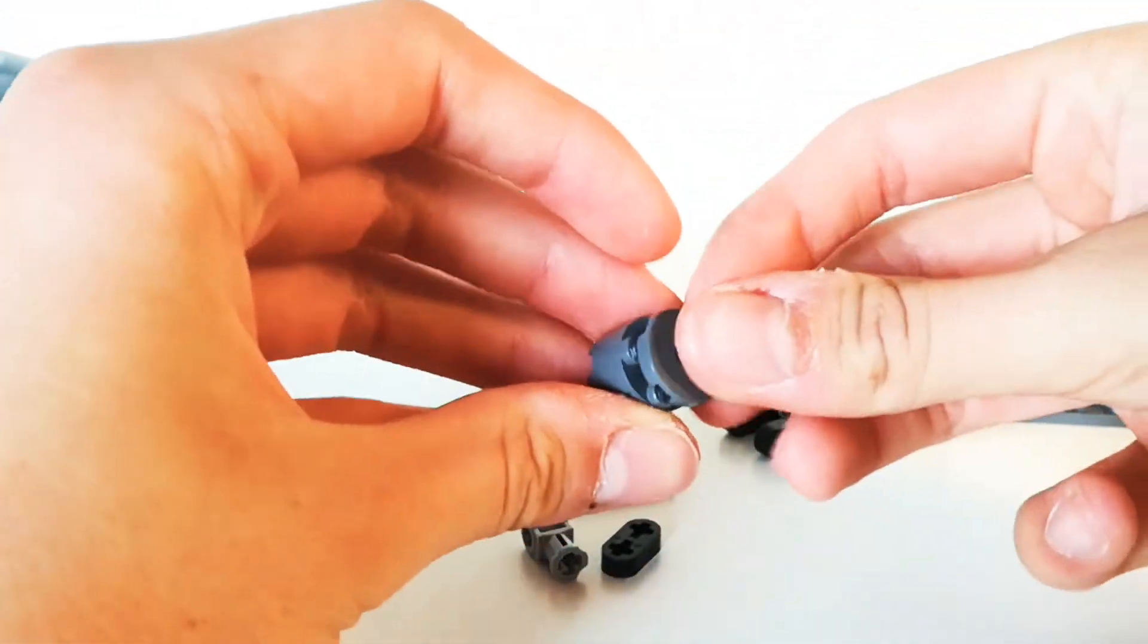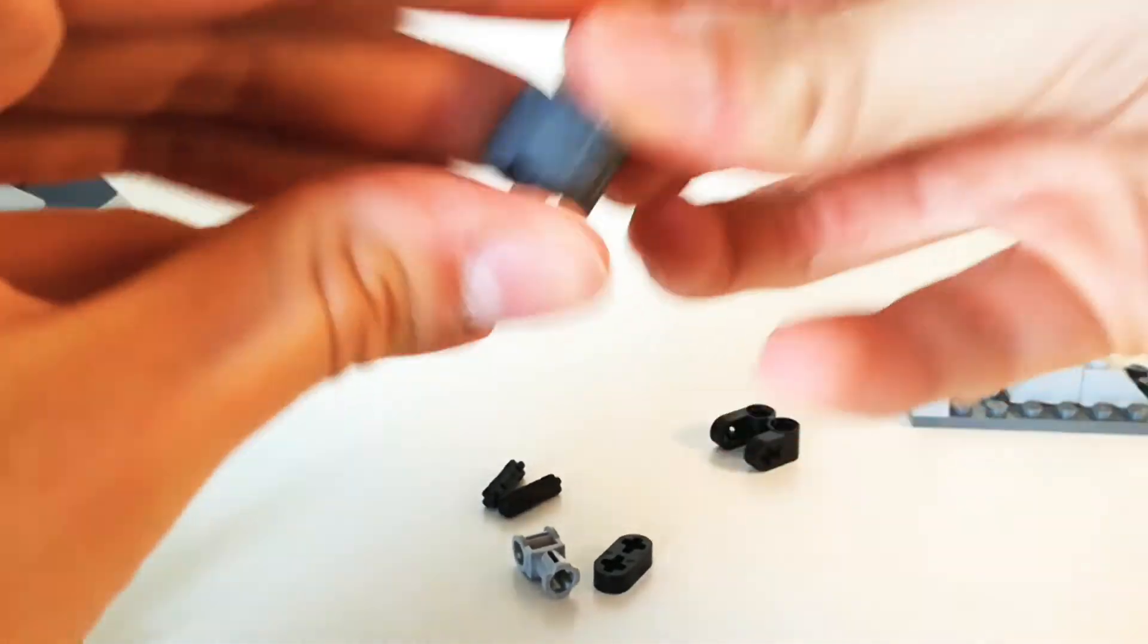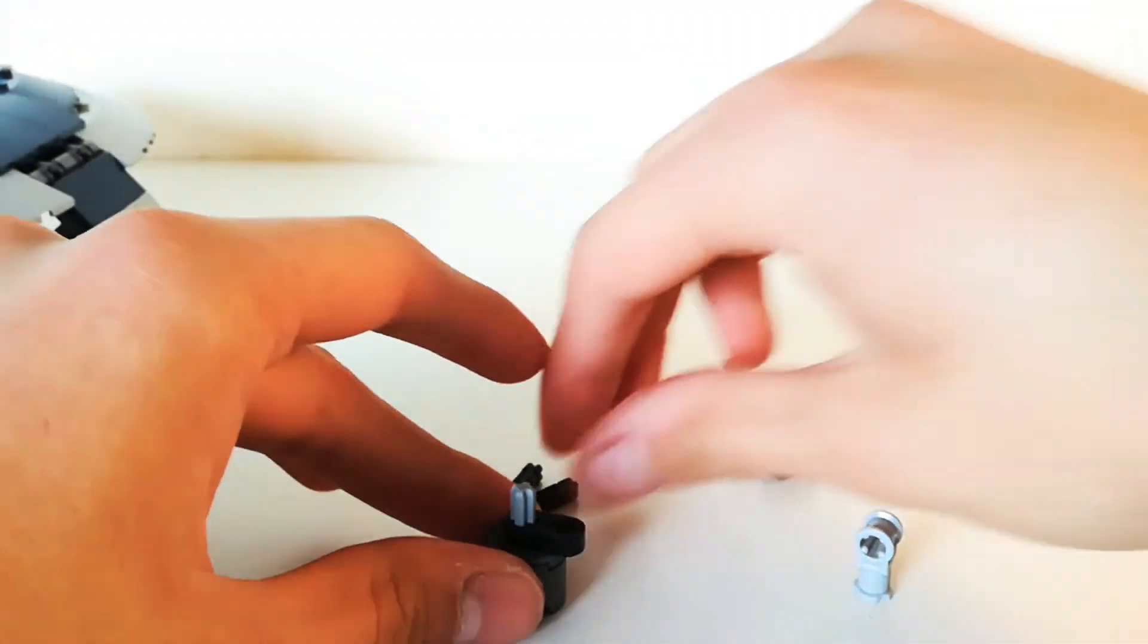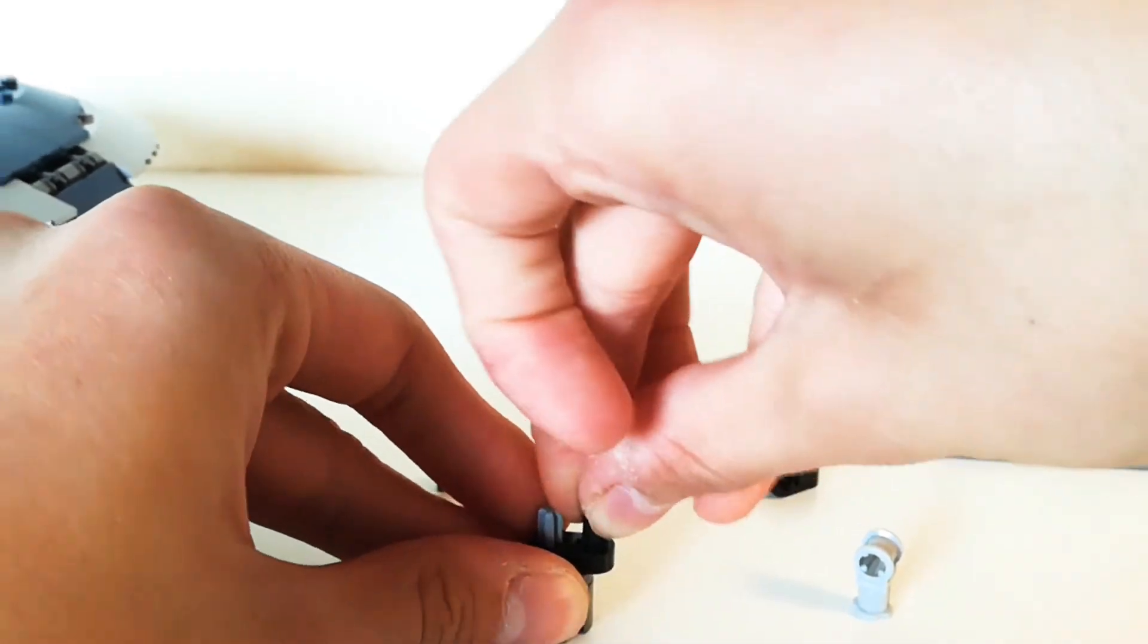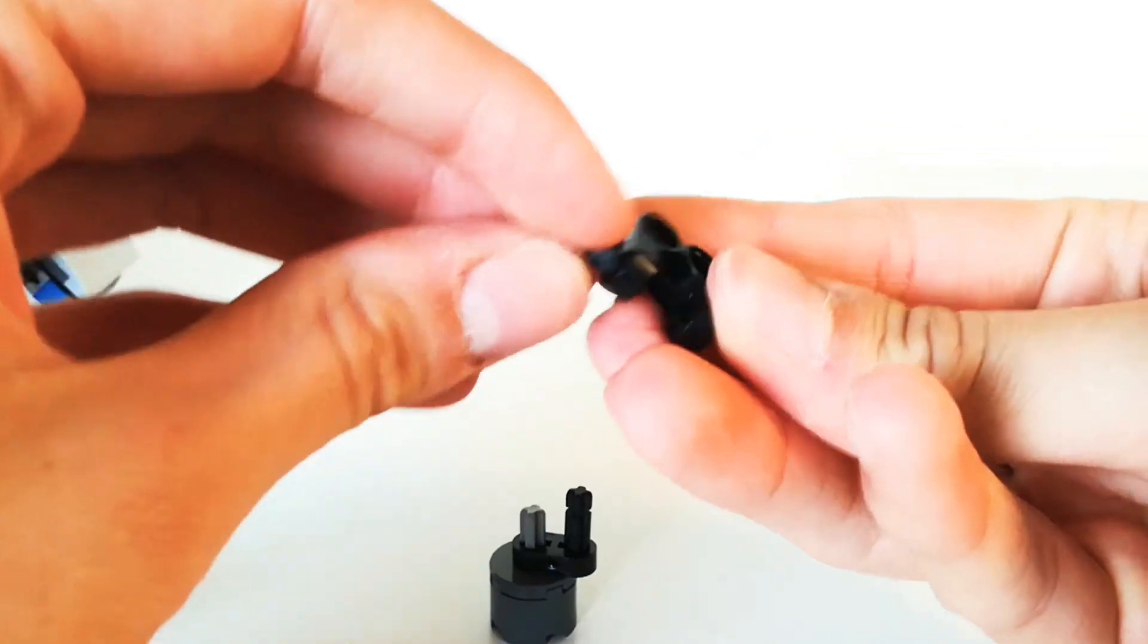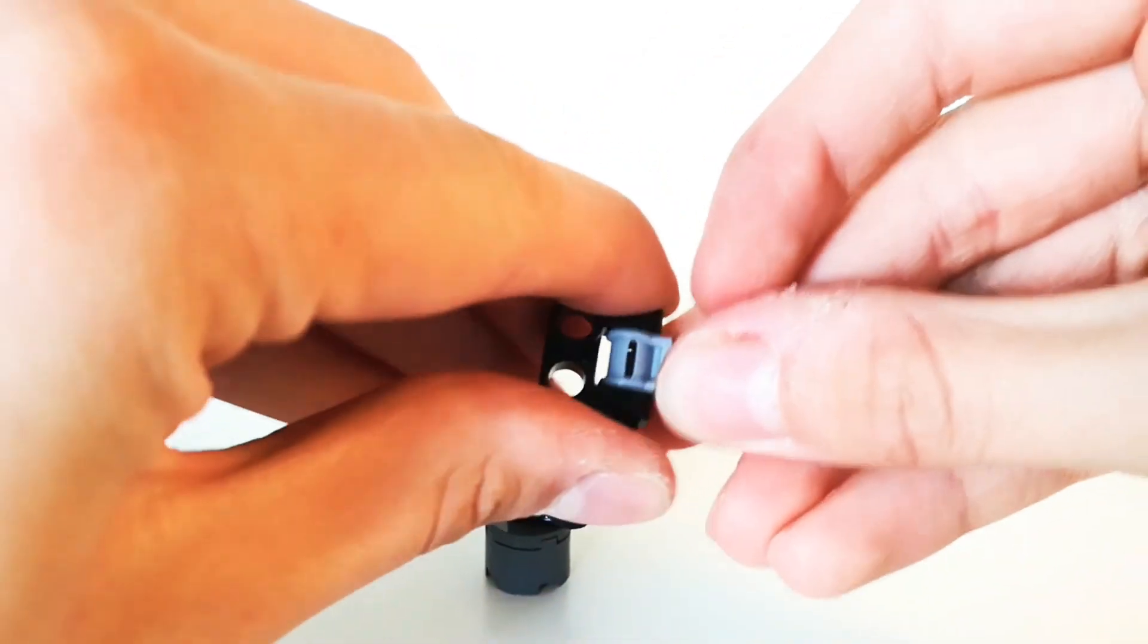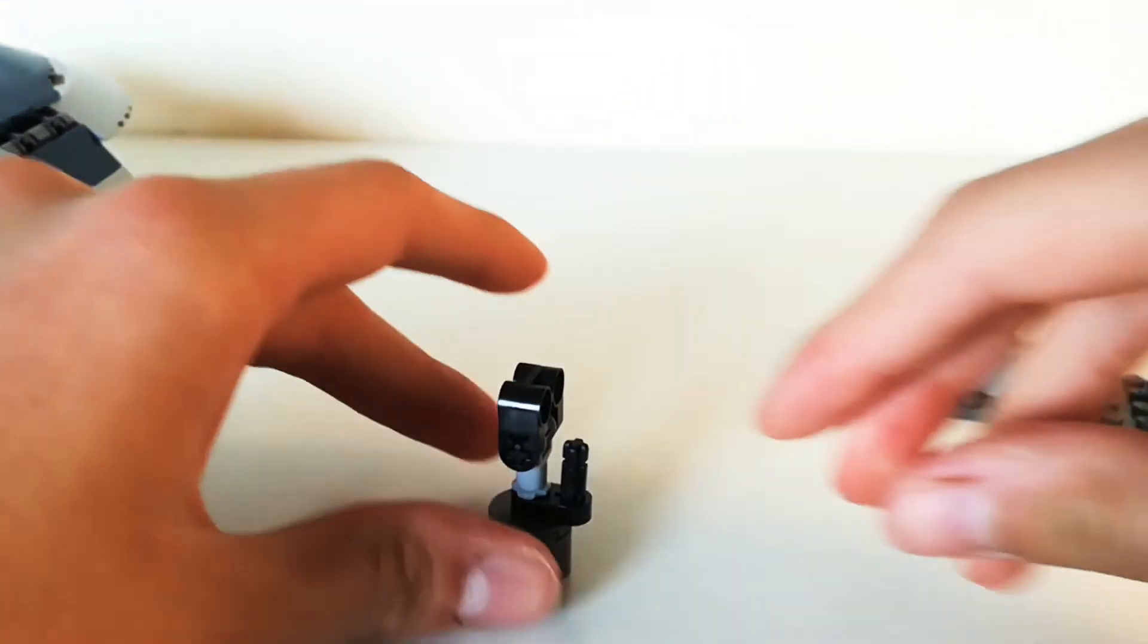First you grab this piece here like this, put this here, and the black axle goes here. You grab this technic piece and then this one here so it's nice and secure. Then like this.